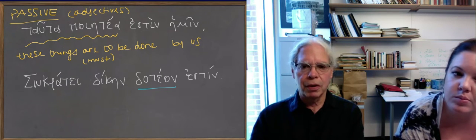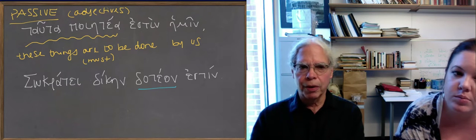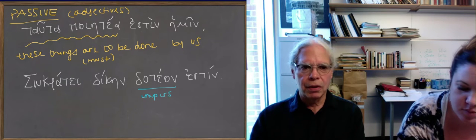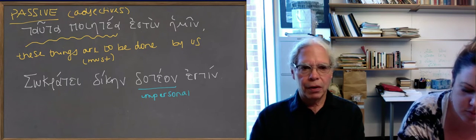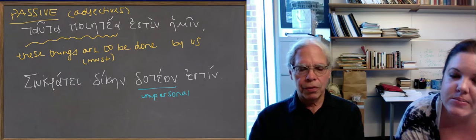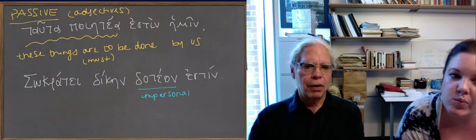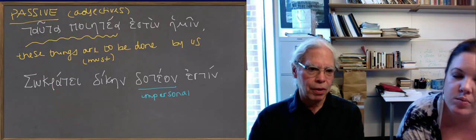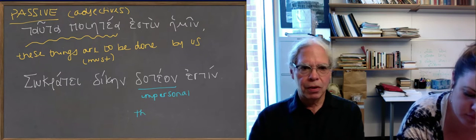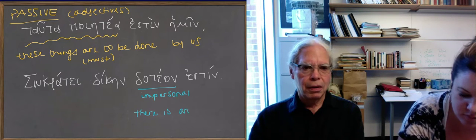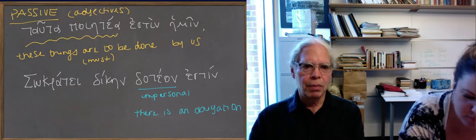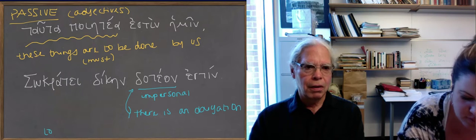So what's happened is that you have an impersonal construction. Tauta poetea is a personal construction in which the adjective is modifying another noun or pronoun. This one is impersonal, but you can't readily translate this into English as an impersonal verb. I think the best way to understand these things is to translate the impersonal construction as active. There is an obligation on the part of Socrates to pay the penalty. So dotea on estin - there is an obligation to pay, or to give a penalty. Pay the penalty is the idiom, to pay the penalty, diken, on Socrates.